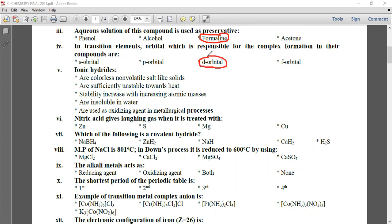Ionic hydrides are colorless, non-volatile, salt-like solids. Nitric acid gives laughing gas when it reacts with magnesium. Which of the following is a covalent hydride? H2S. The melting point of NaCl is 801°C; in the Downs process it is reduced to 600°C by using calcium chloride. Alkali metals act as reducing agents. The shortest period of the periodic table is the first period.